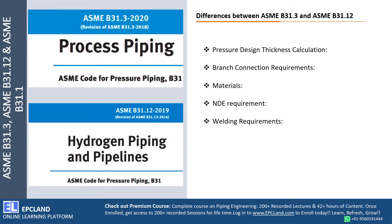Let us start with pressure design thickness calculation. We'll discuss what are the various differences when we talk about thickness calculation between these two standards — B31.3 and B31.12.